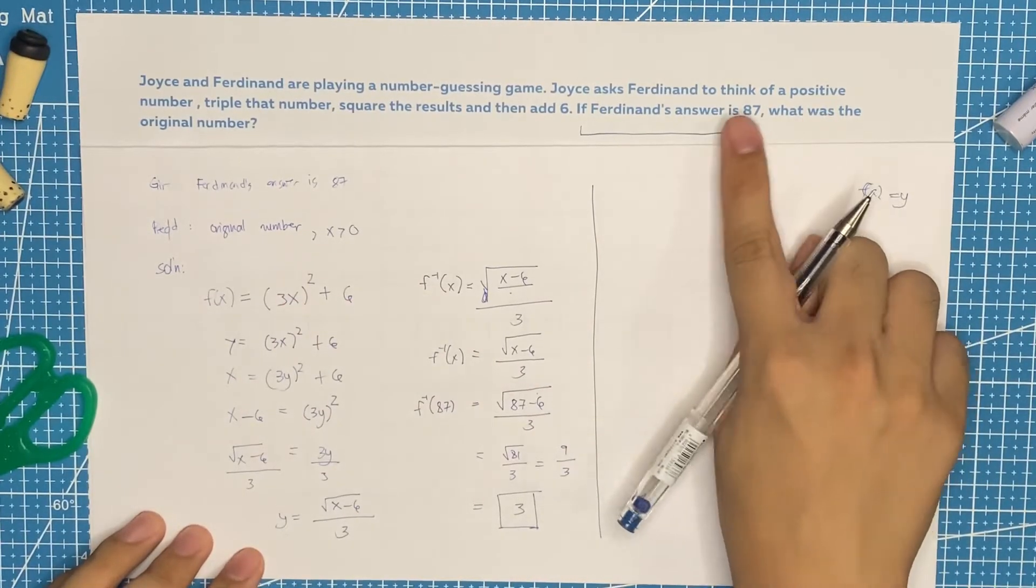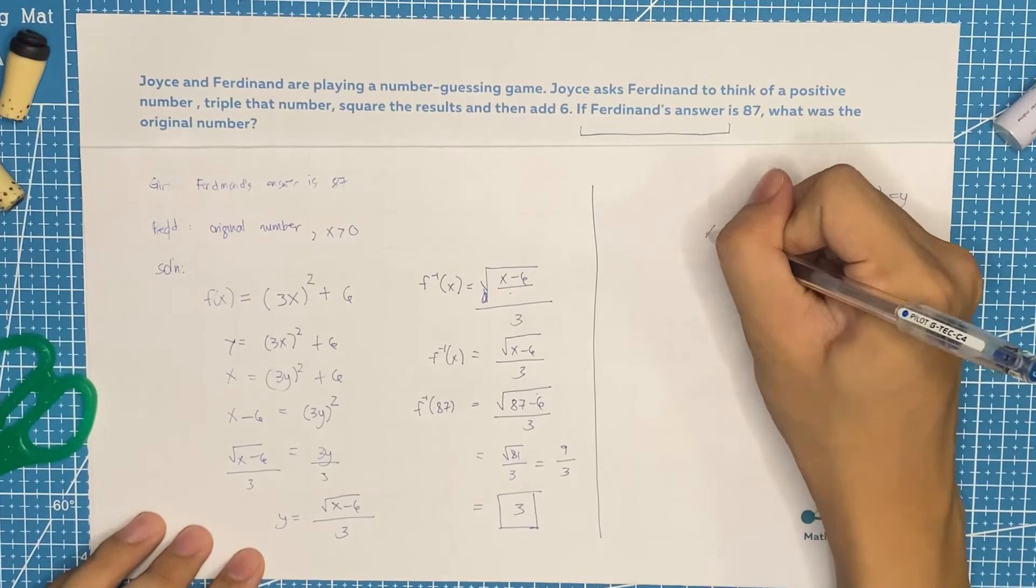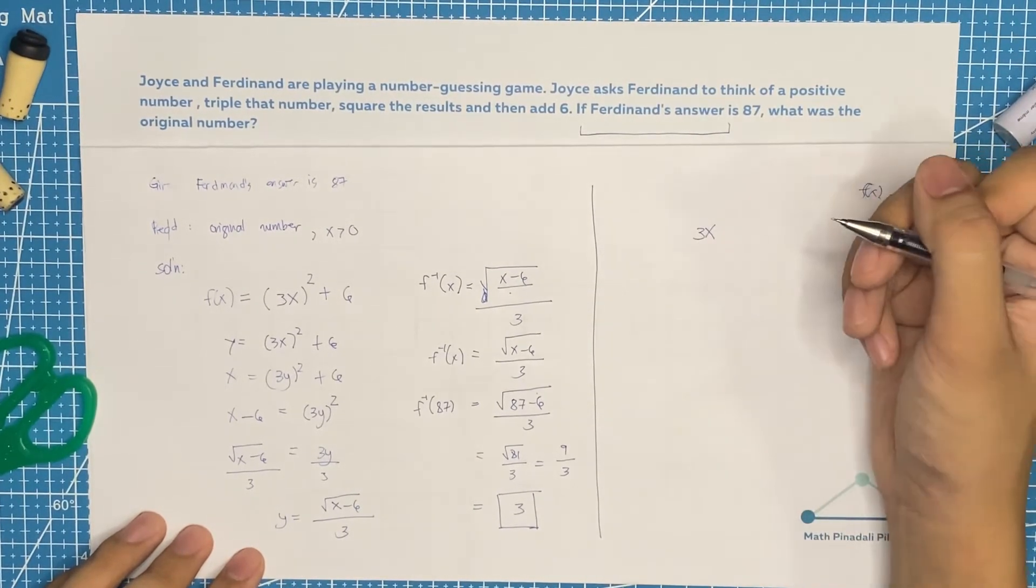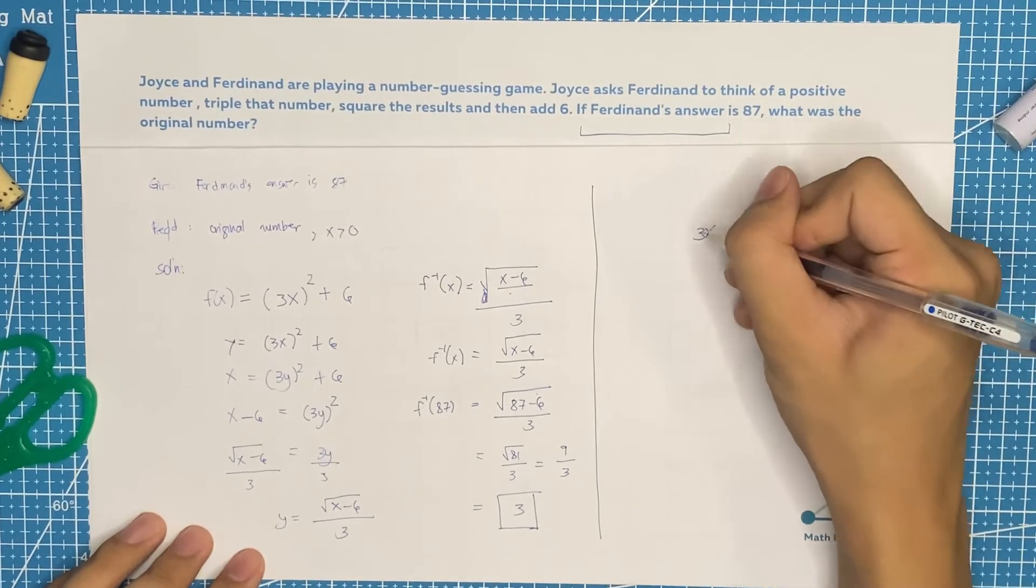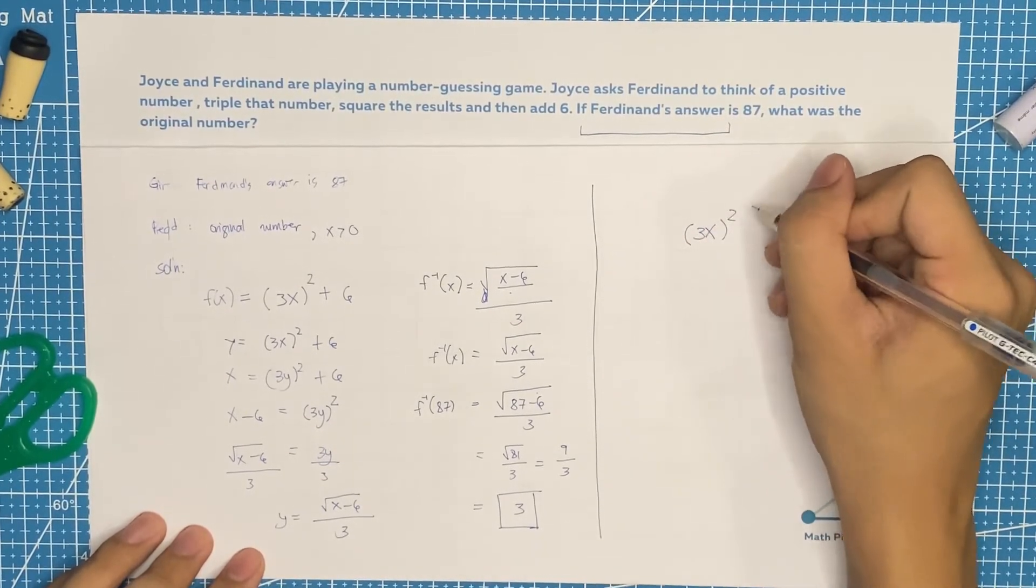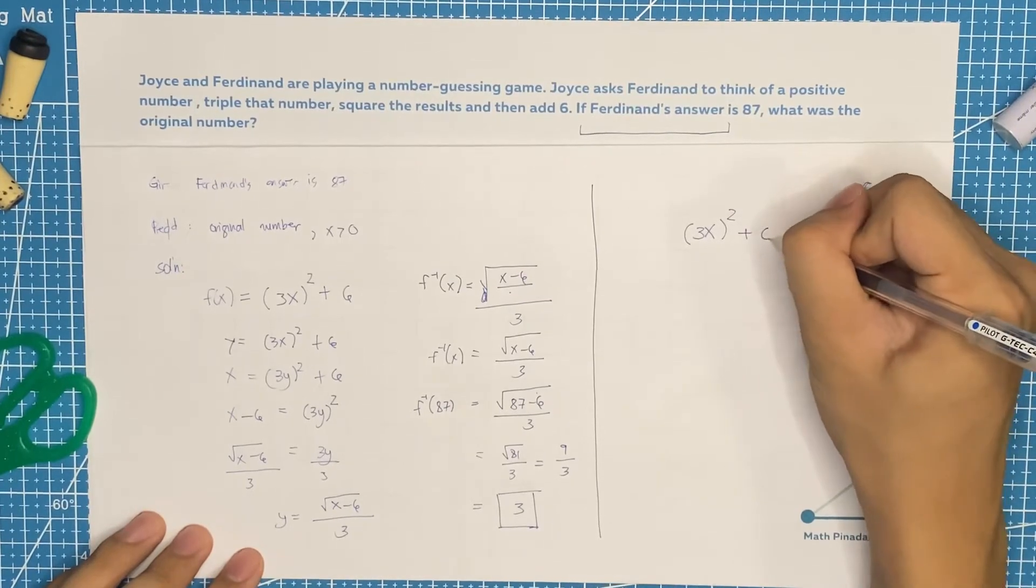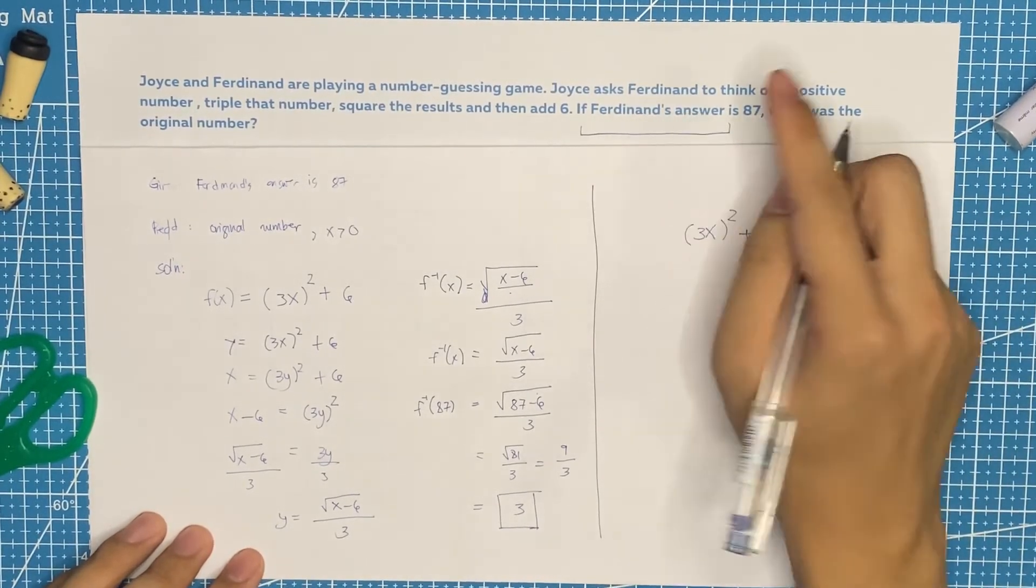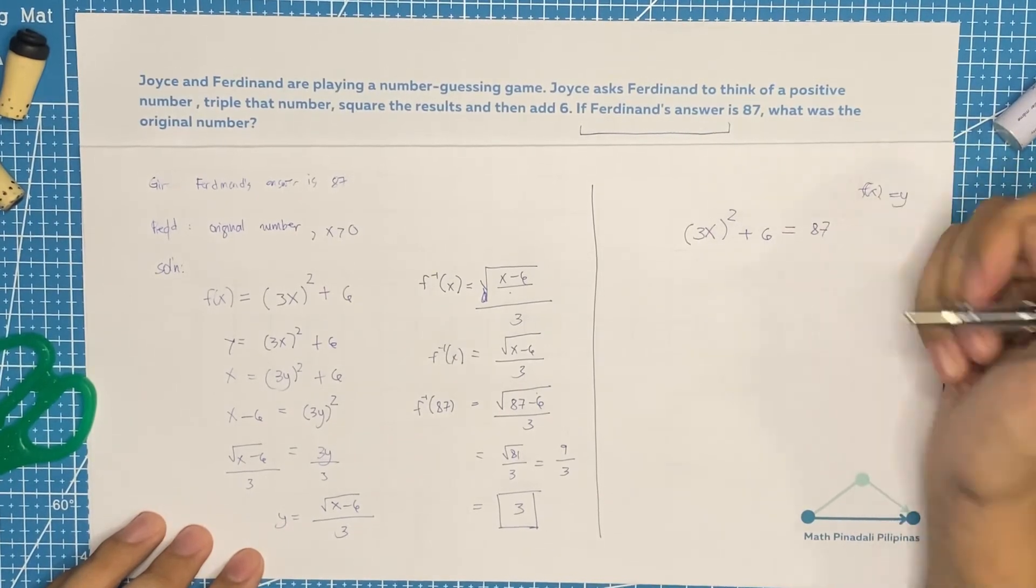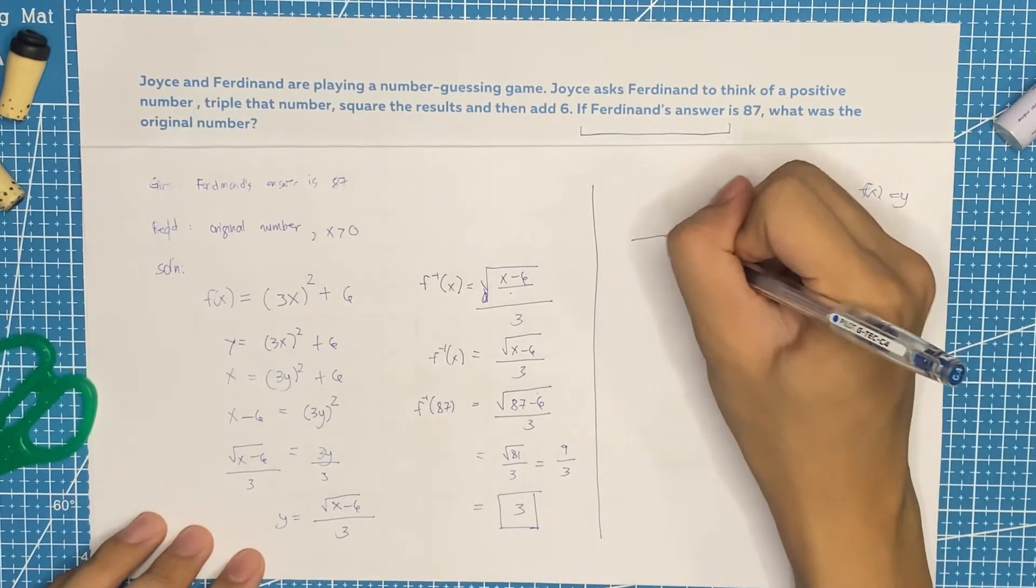Let's go back. So think of a positive number, let that be x. Triple that number, 3x. Square that number, that would be 3x squared. Then add 6. If Ferdinand's answer is 87, what was the original number?